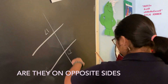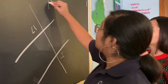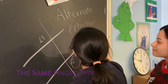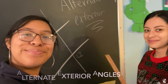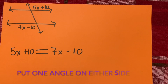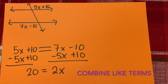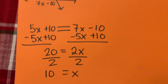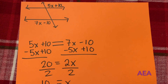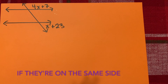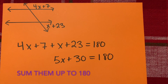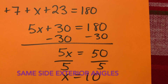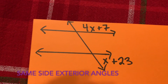Are they on opposite sides of the transversal line, the same angle type? Then you have alternate exterior angles. Start with an equal sign, put one angle on either side, combine like terms, subtract the right to find alternate exterior angles. If they're on the same side, sum them up to 180, combine like terms, subtract the right to find same-side exterior angles.